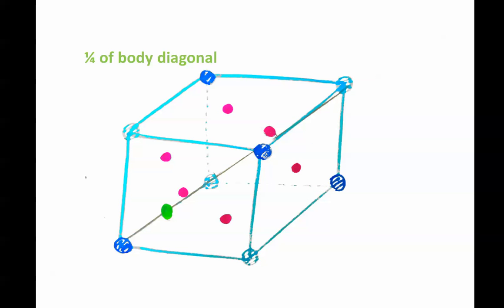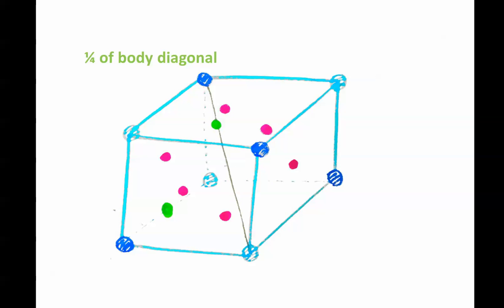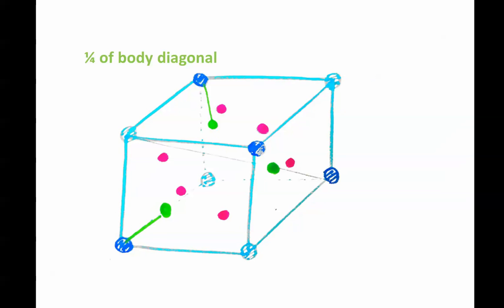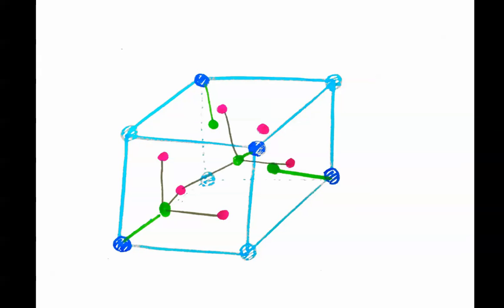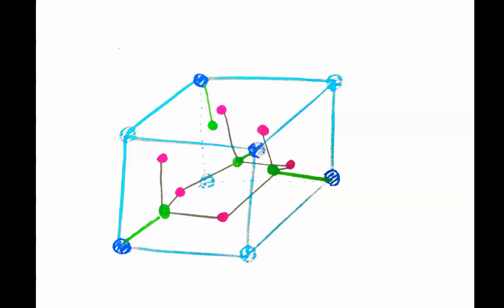And there are four interior atoms displaced by one-fourth of the body diagonal from the corner atoms. The atoms that are shown with dark blue here are going to directly connect to the red circle, like this.